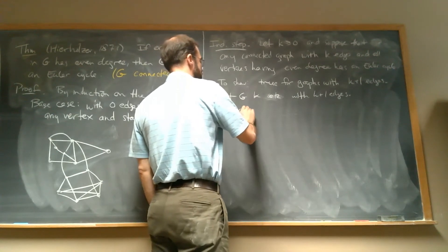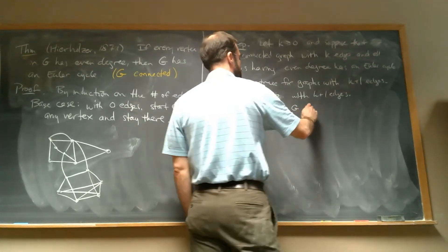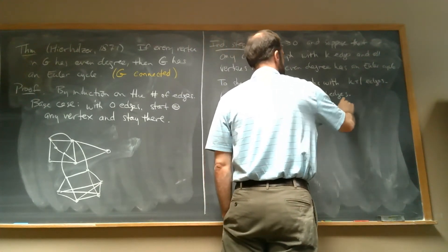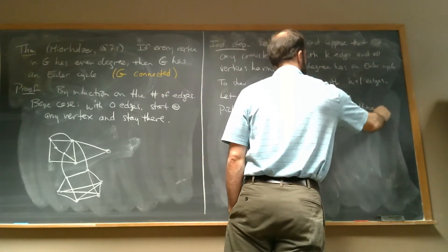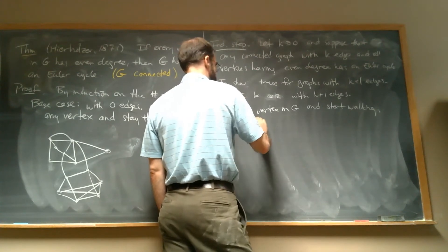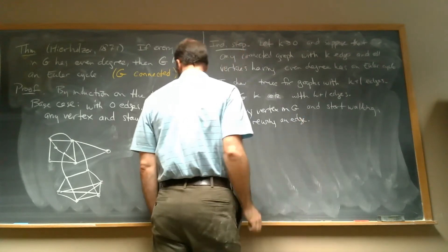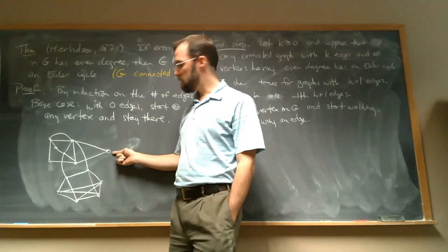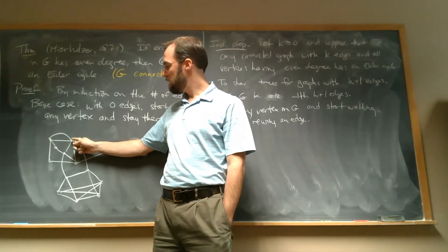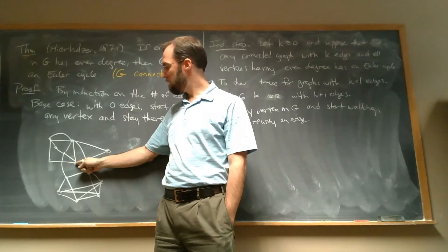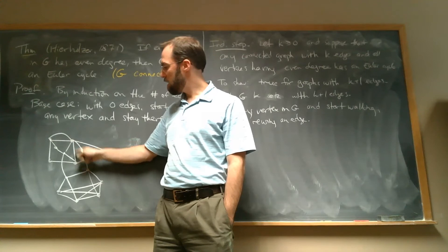Pick any vertex in G and start walking, never reusing an edge. I might just randomly pick a vertex and start walking — going here, and then here, and then here. I can't go back on an edge I've already used, so I keep making choices.